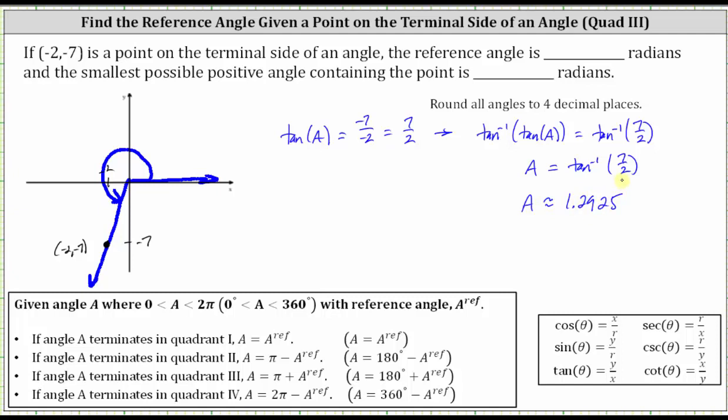But this is not the angle we are looking for. 1.2925 is less than pi over two radians. This angle is in the first quadrant. So let's go ahead and label this angle A prime, and let's also sketch it. It has the same tangent function value as the angle we are looking for, but it's in the first quadrant.